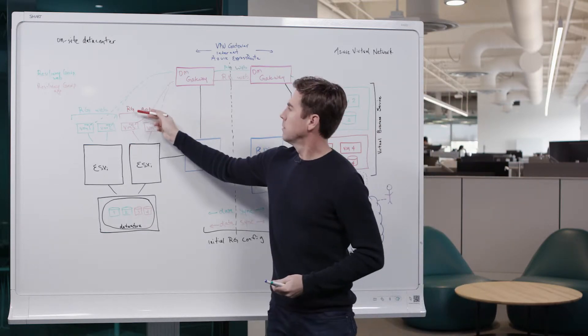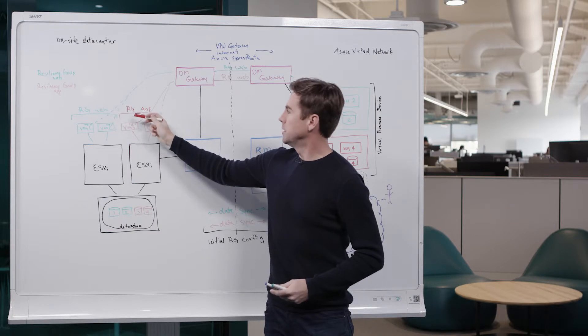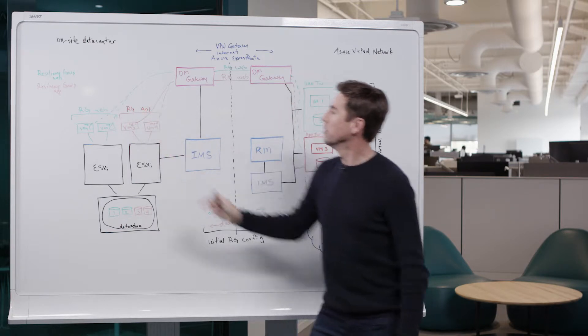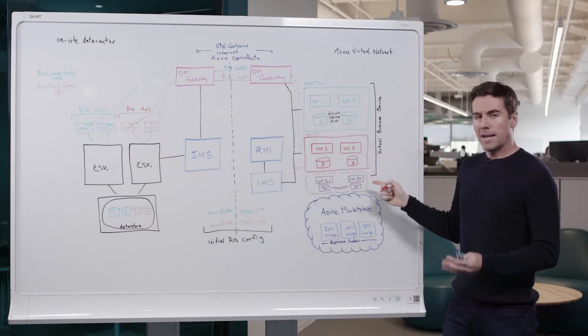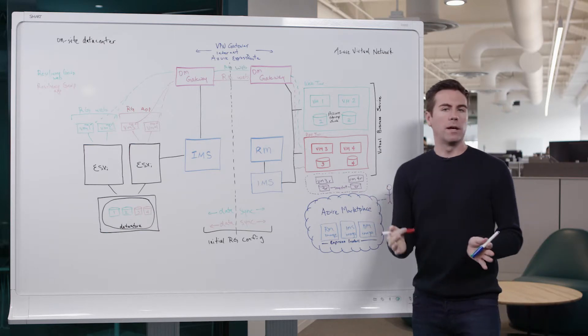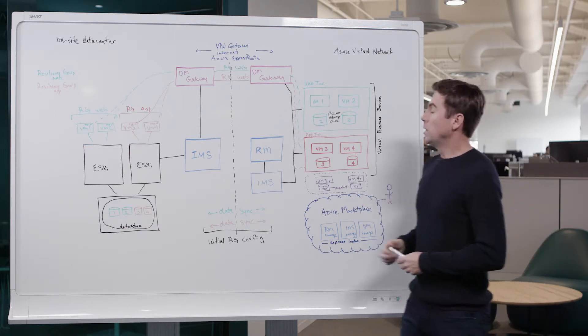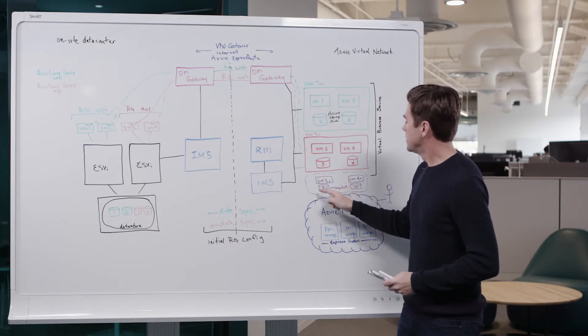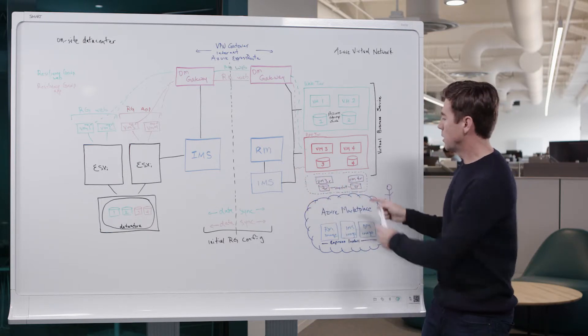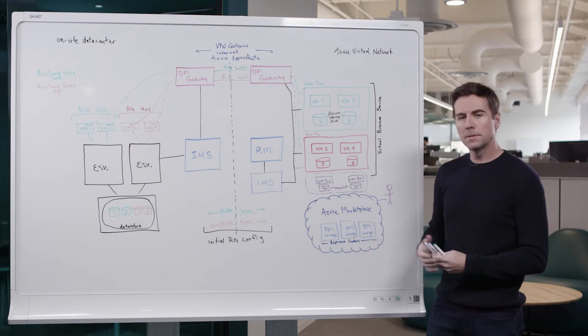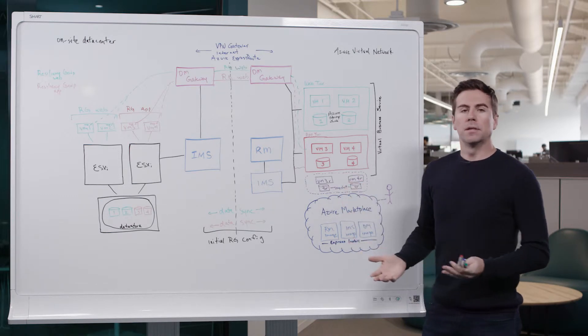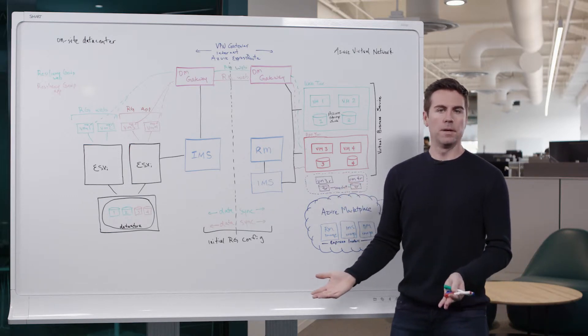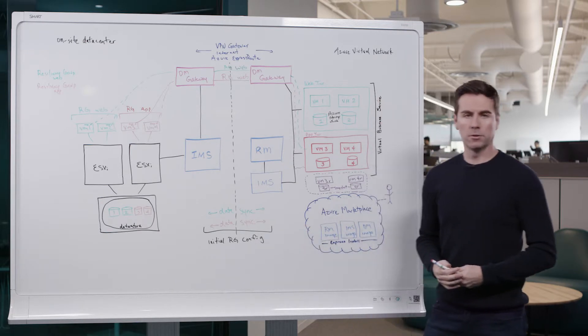So for example, say we wanted to do a rehearsal with our resiliency group application here, and we wanted to test that within Azure prior to an actual DR failover. We can do a rehearsal where we would bring up snapshots of the disks as well as temporarily provisioned VMs, and that can be used for testing purposes all in isolation without affecting anything from the production side.